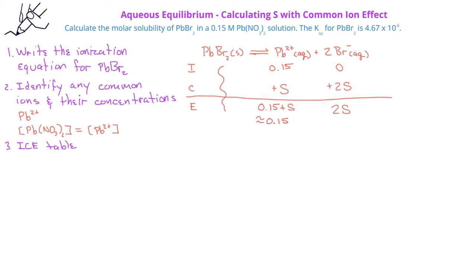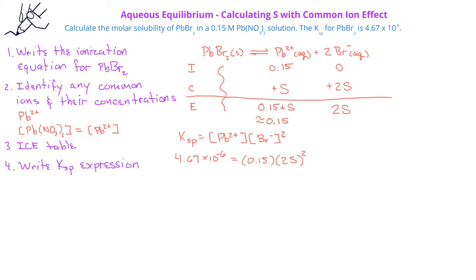Next, we write the Ksp expression for lead-2 bromide: Ksp equals the concentration of lead-2 plus times the square of the concentration of bromide ion. Entering the values: 4.67 × 10⁻⁶ = 0.15 × (2S)². This simplifies to 4.67 × 10⁻⁶ = 0.60S². Solving further, S² = 7.8 × 10⁻⁶, and we find the molar solubility S = 2.8 × 10⁻³.